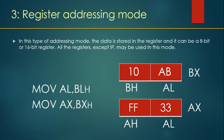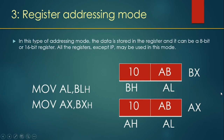In register addressing mode, the data is stored in a register and it can be an 8-bit or 16-bit register. All registers except IP may be used in this mode. Basically, data from one register is copied to another register — there is a source and a destination. Both registers are specified in the instruction. Whatever data is in AX register is going to be overwritten with the BX register data, that is 10AB.